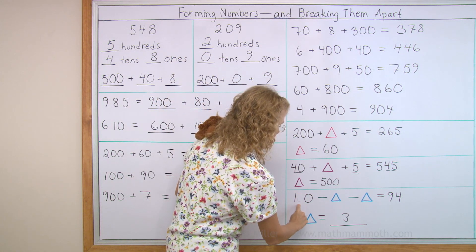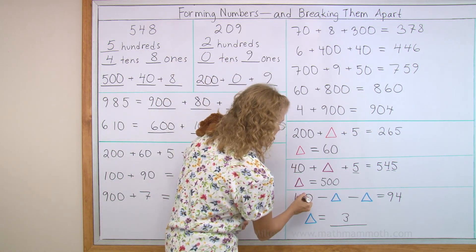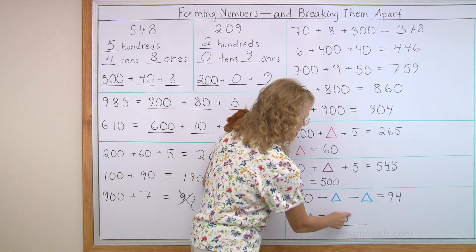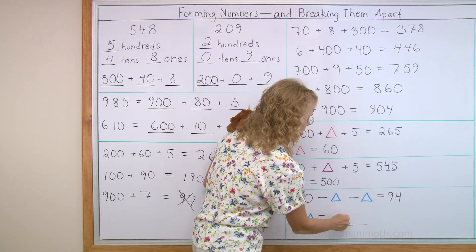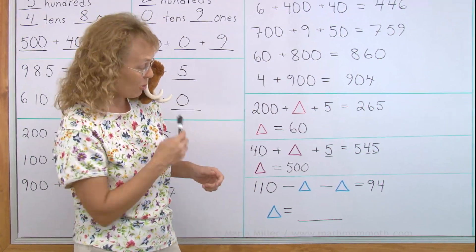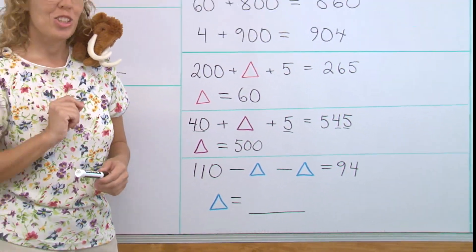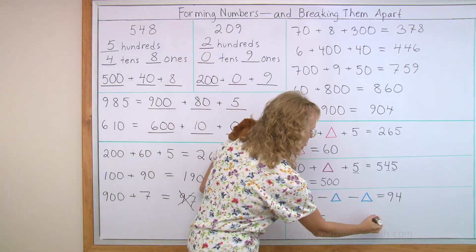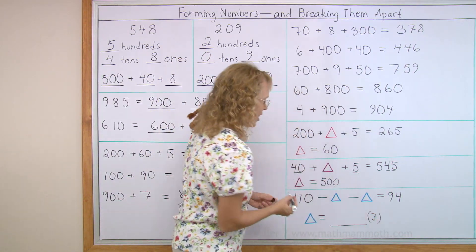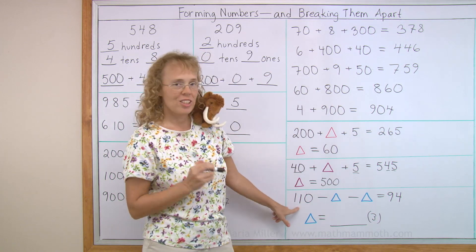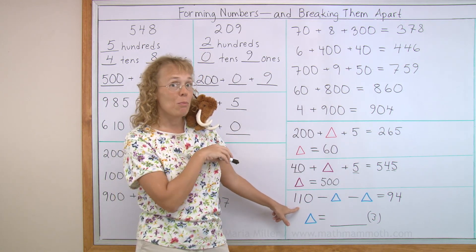Let's change this one number here to one hundred and ten. So the answer changes. Can you solve it now? Can you solve it, Matthew? I'll show you a trick. Remember, the answer was three. Okay? It used to be three. I changed this so that it is ten more. Therefore, each triangle here has to be five more than it was before.